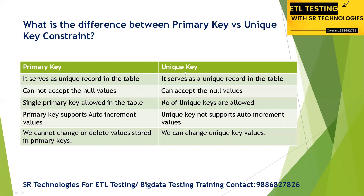At a high level: a primary key will not allow null values and only a single primary key can exist in a table. A unique key serves the same purpose but can accept null values. Another common interview question is: how many null values can a unique key allow? The answer is any number of null values, because each null is considered different from another.